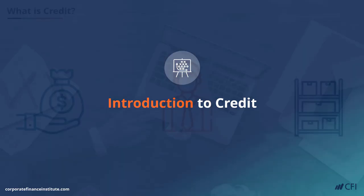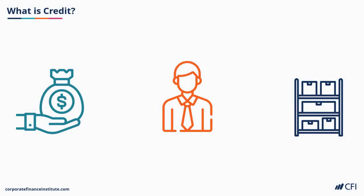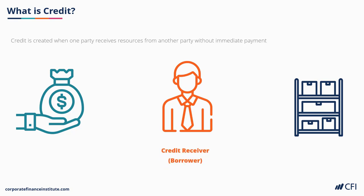Introduction to credit. What is credit? Credit is created whenever one party receives resources from another without immediate payment for those resources. At the center of this diagram here we have the credit receiver, and the credit receiver can receive resources from one of two different types of counterparties — either a lender, as shown on the left, or the seller of products and services. Both of those are referred to as credit providers.